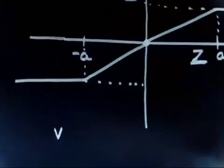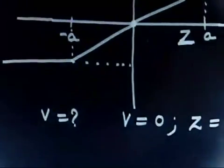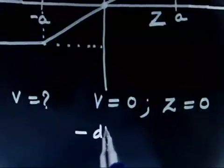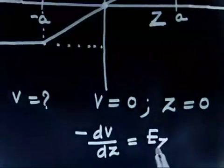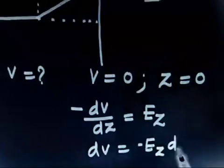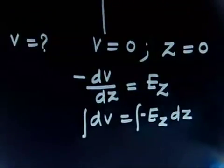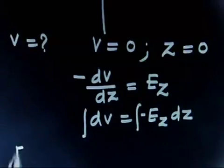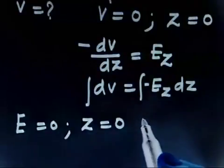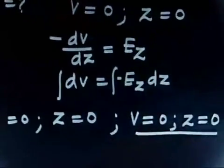The question also asks us to find the potential. Assume potential V = 0 when z = 0. We use the relation: minus dV/dz equals E_z. So dV equals minus E_z dz. We know the electric field in all three regions, so we can integrate to find the potential.